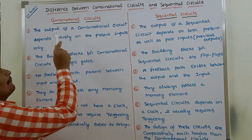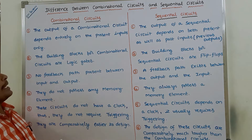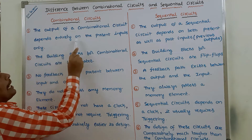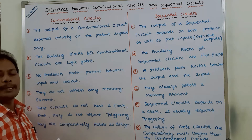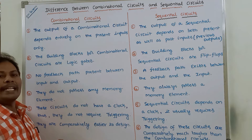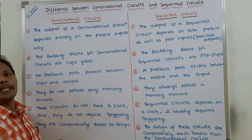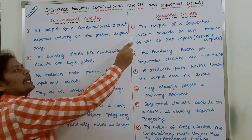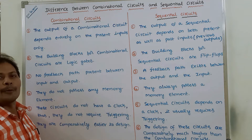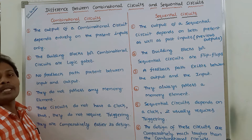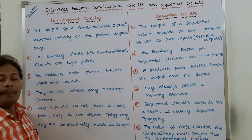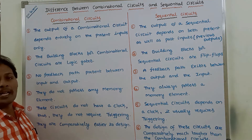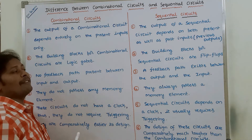The first point is, in the case of combinational circuits, the output depends entirely on the present inputs only. That means at any instant of time, the output of a combinational circuit depends only on the present inputs. Whereas in the case of sequential circuits, the output at any instant of time depends not only on the present inputs but also on the past inputs, which is nothing but previous outputs.